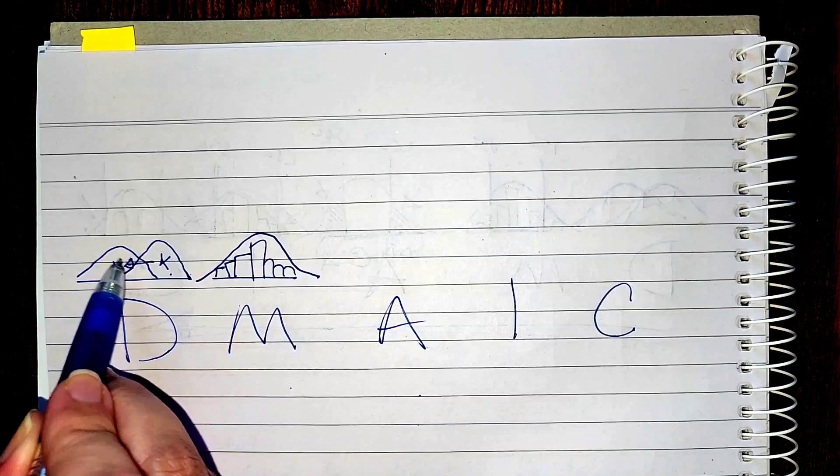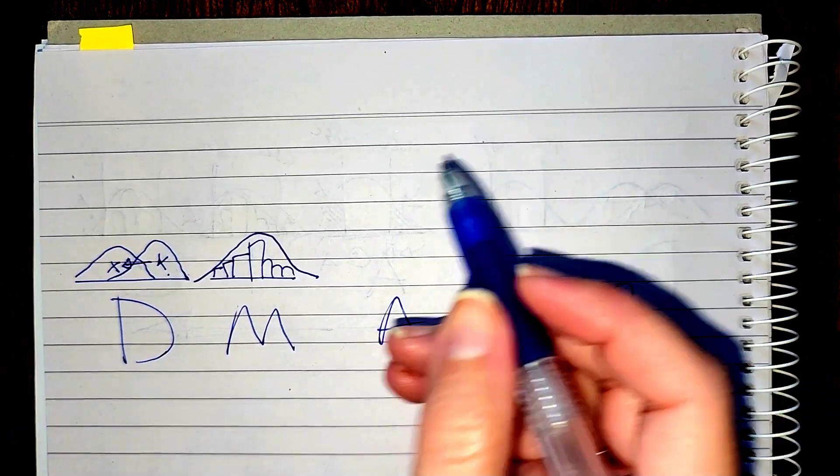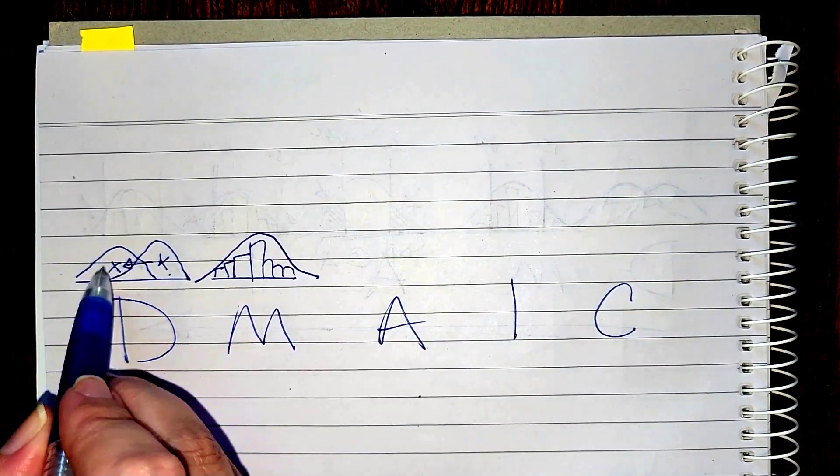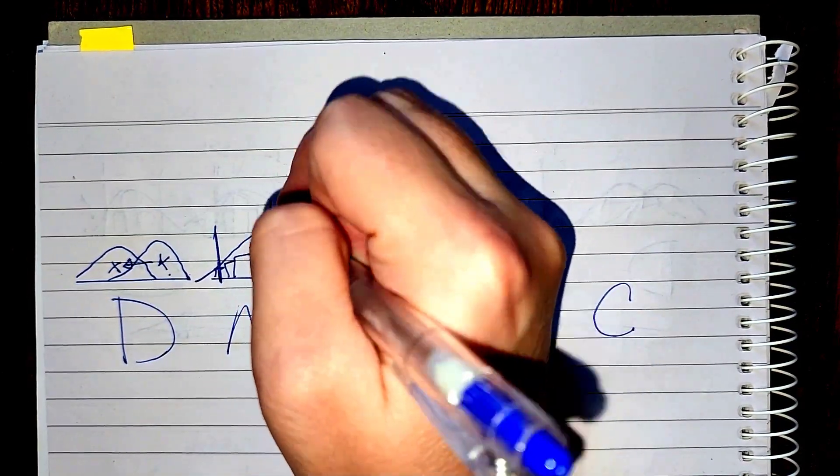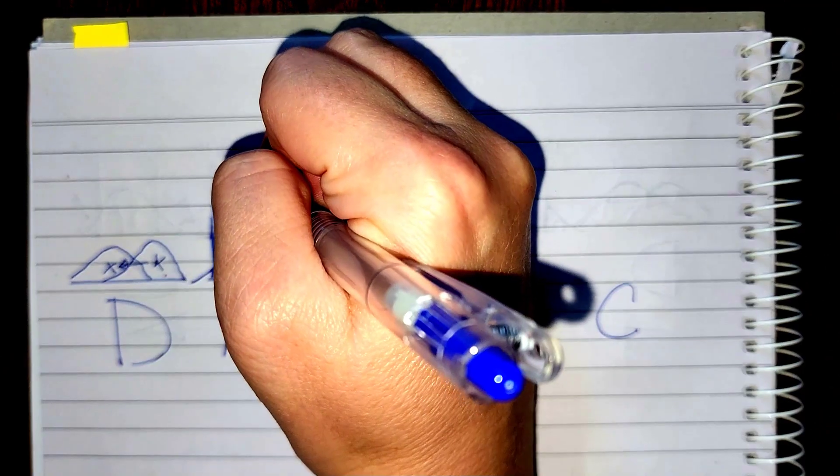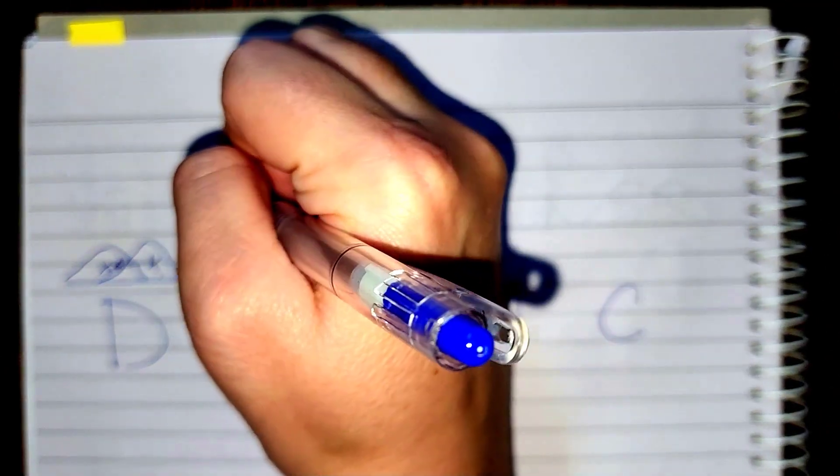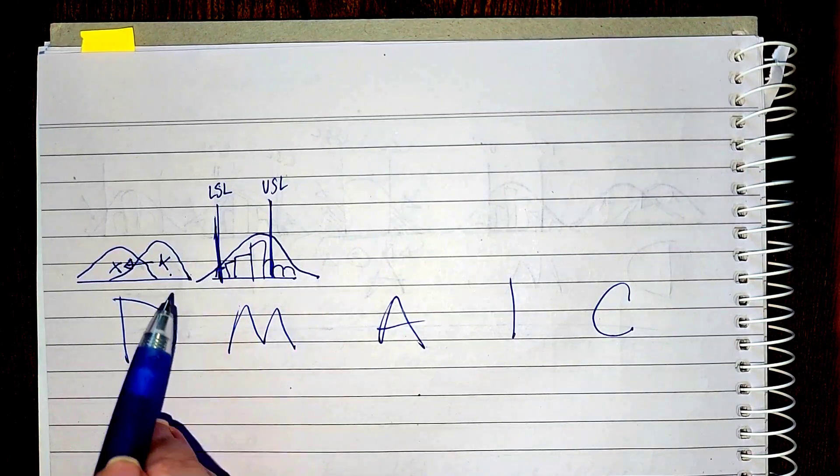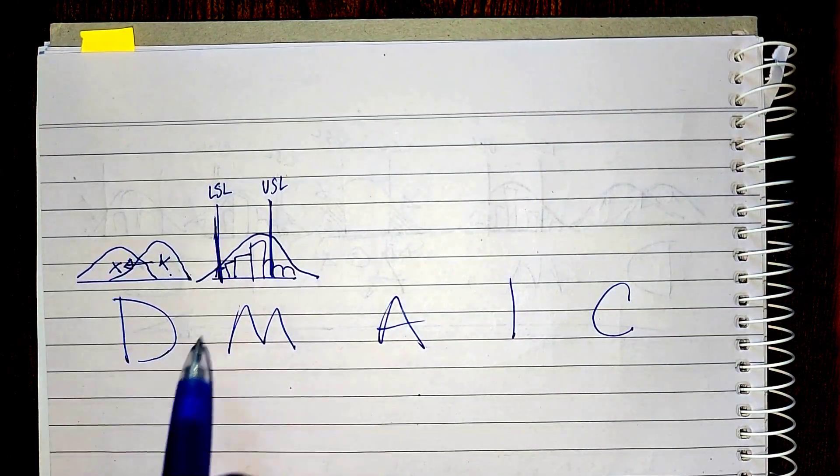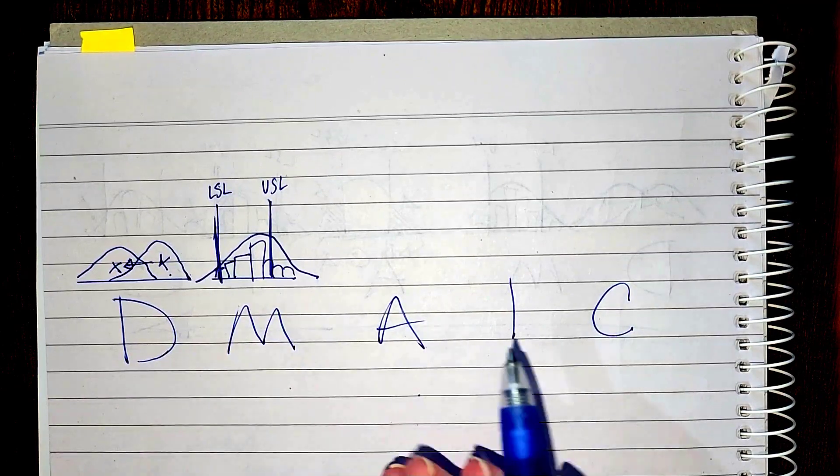Now we already decided where we want to see that shift to, and we'll work with our customers to validate that voice of the customer or voice of the business. Then we can lay that over our data today to be able to see those upper specification limits and lower specification limits. We're looking at those goal posts that we're trying to hit in our project against our current process.